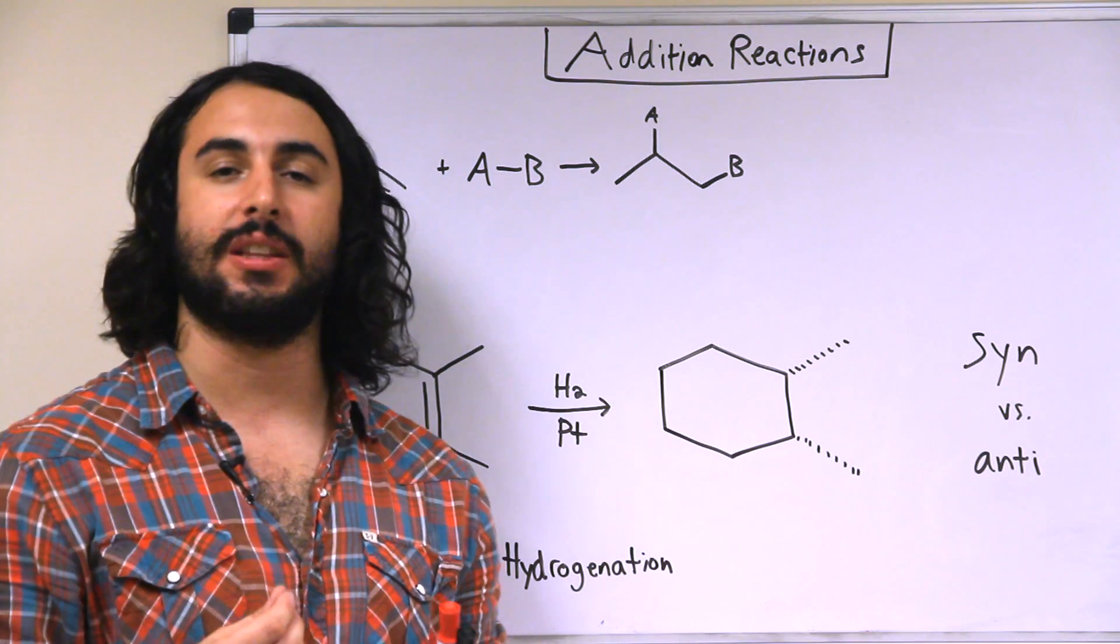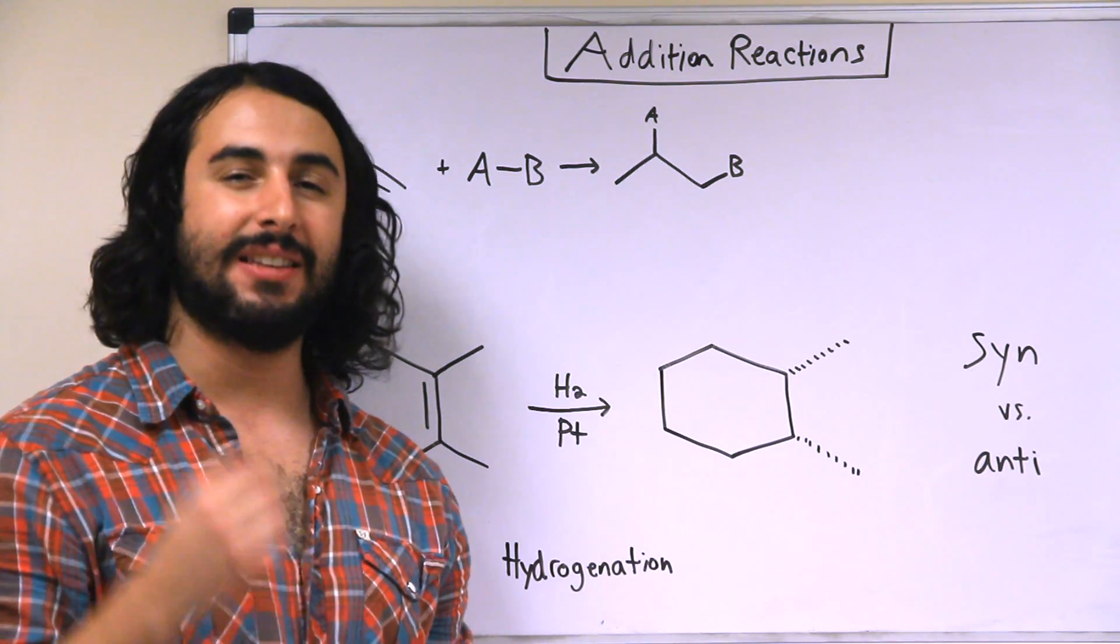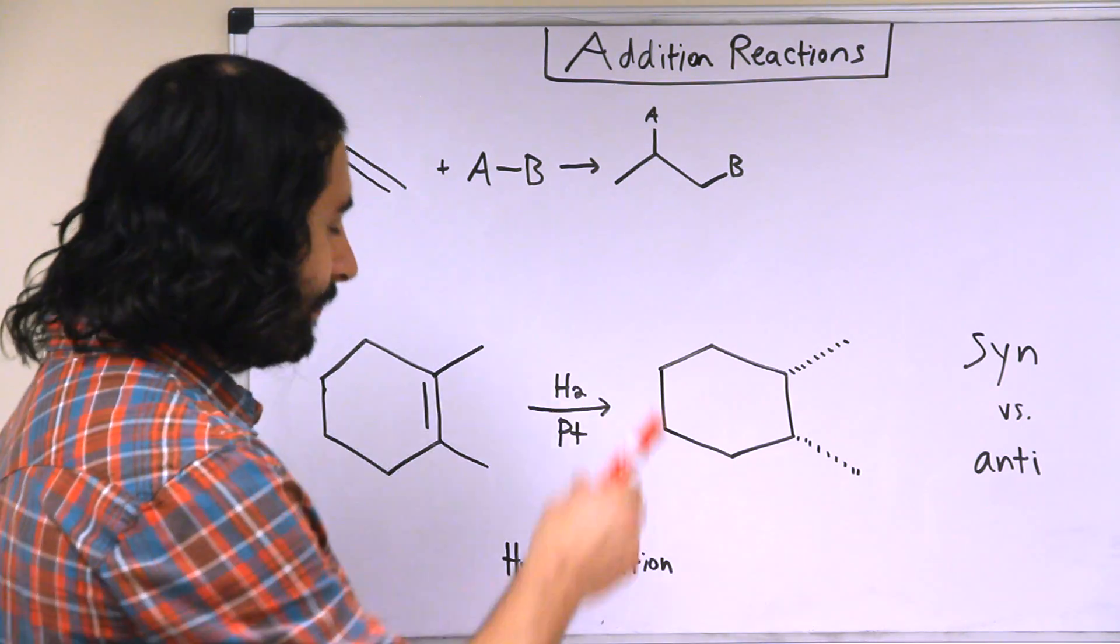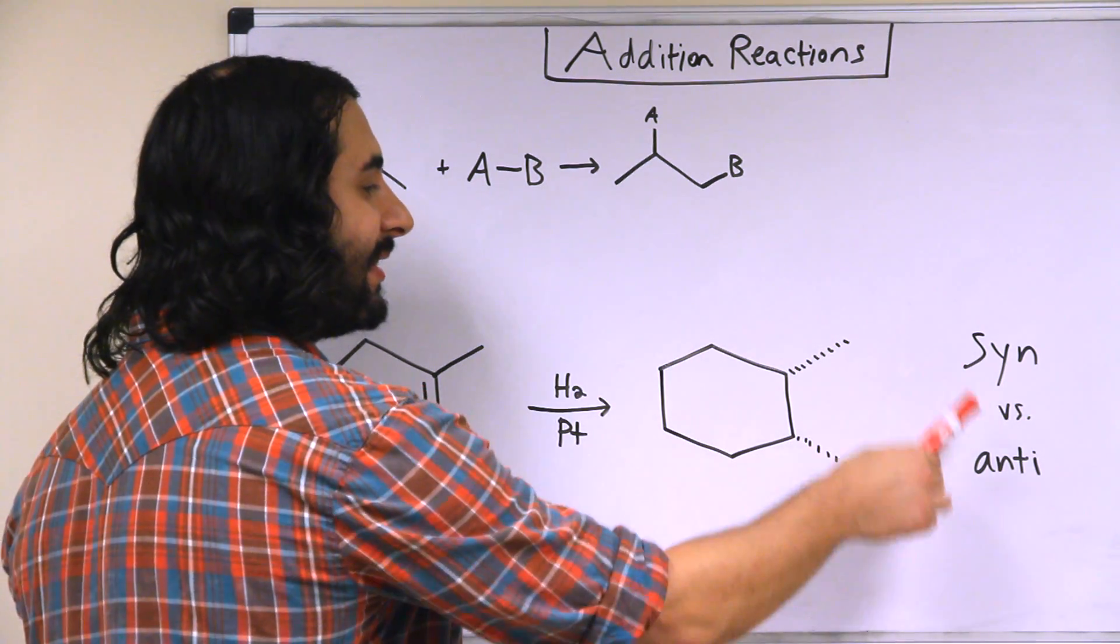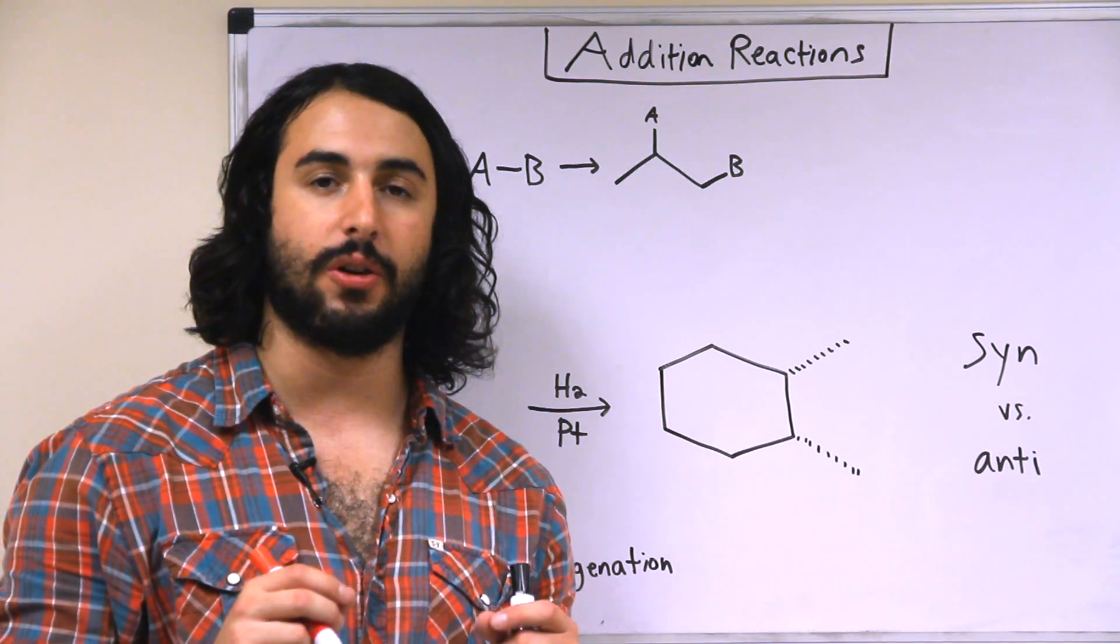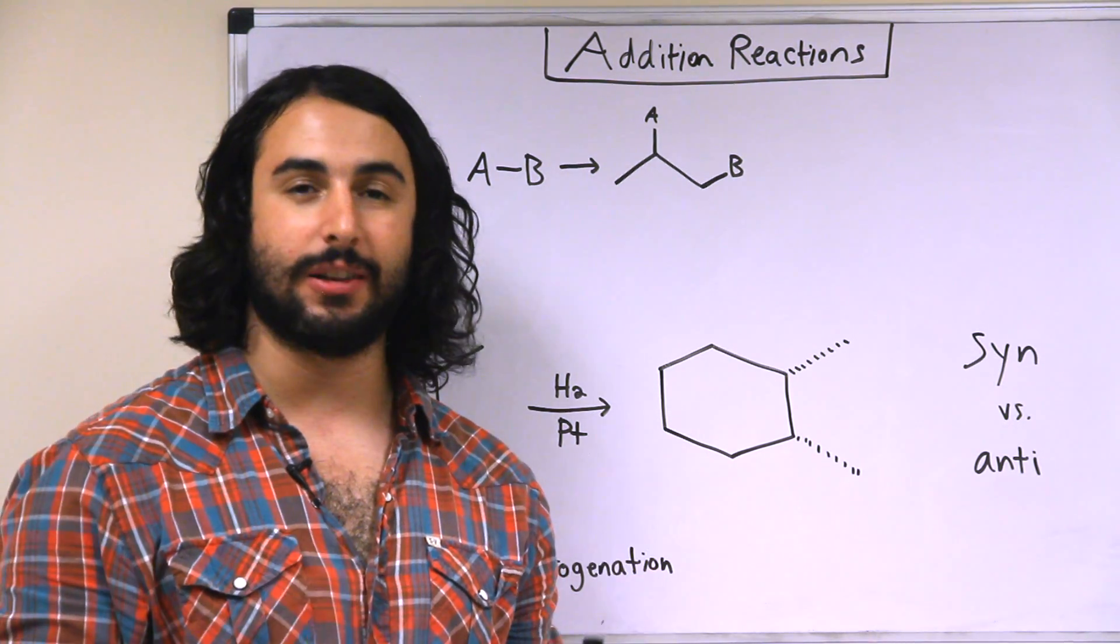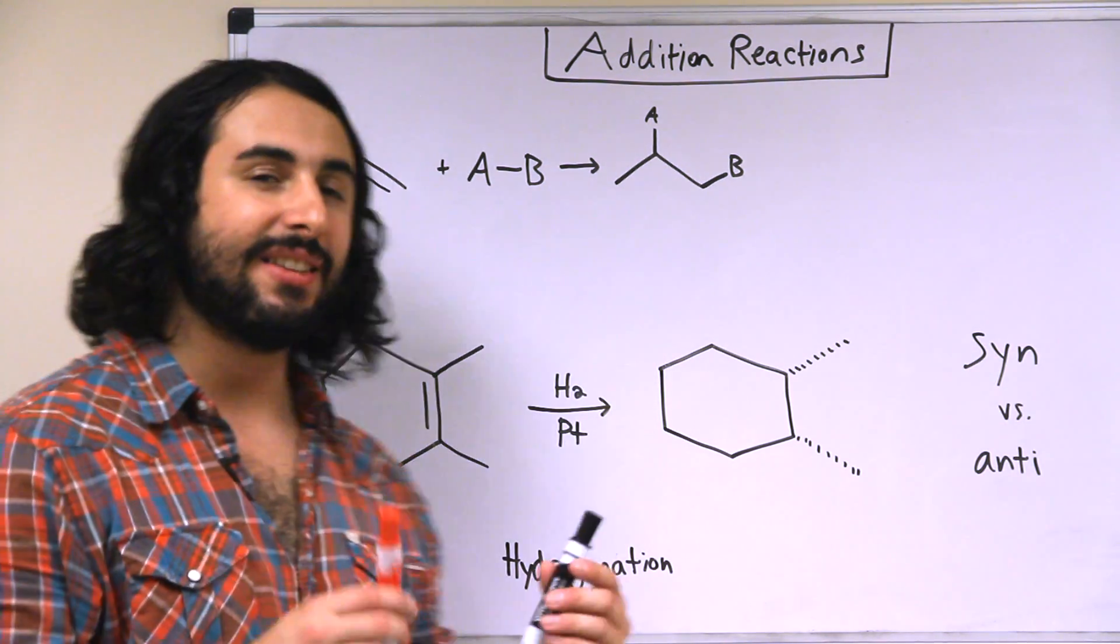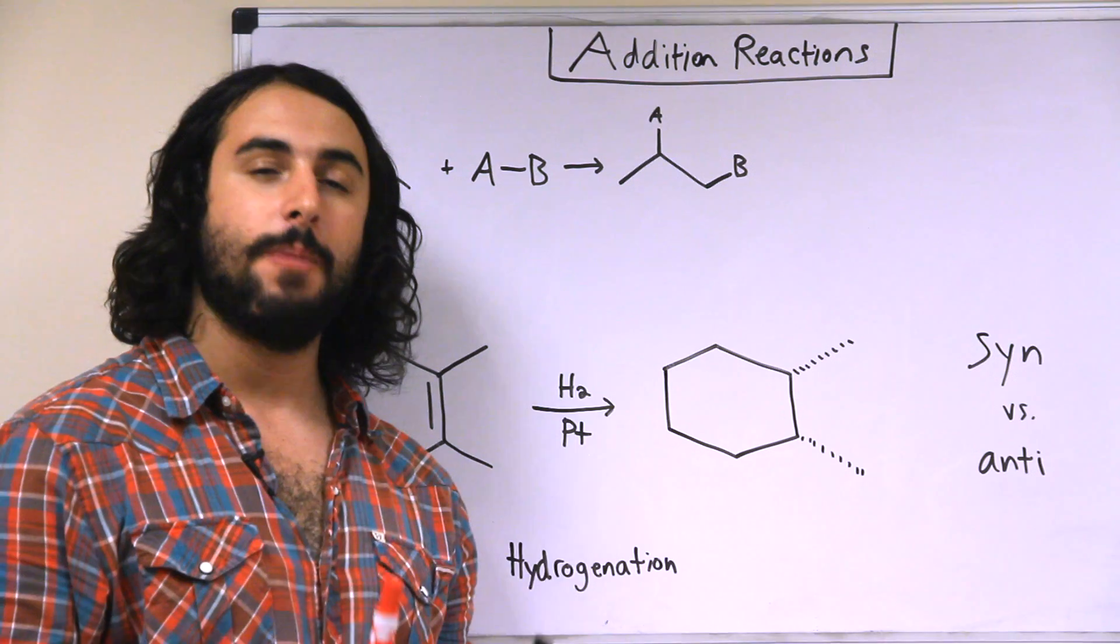The first thing we have to understand about addition reactions is that they can be stereospecific. In this case, we have to learn the terms syn and anti. Those are terms that discuss the stereospecificity of a particular addition reaction. In this case, hydrogenation over platinum metal is a syn addition because the two groups that are being added to the substrate are being added from the same side.